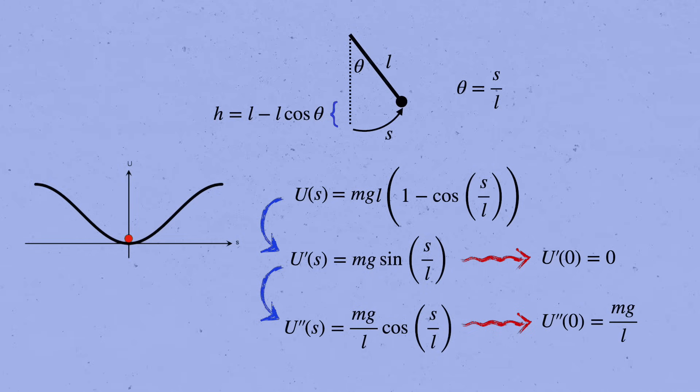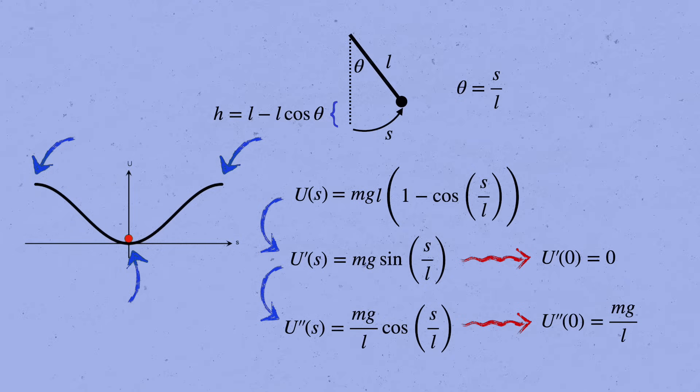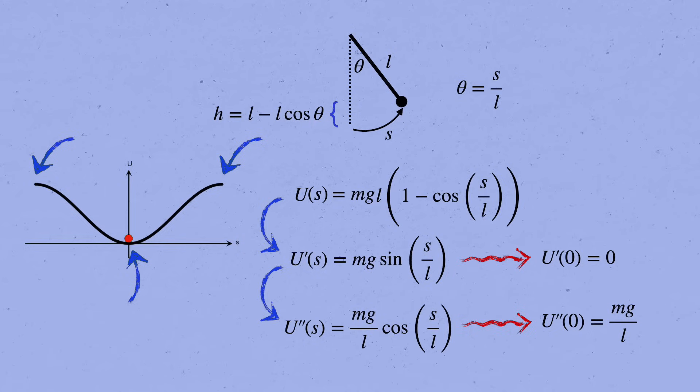Note that it's positive. That's how we know we're at a stable equilibrium, as opposed to the top of the arc where the slope of the potential also vanishes, but the second derivative is negative. That's an unstable equilibrium, because if you take a tiny step away from it, the pendulum will swing far away.